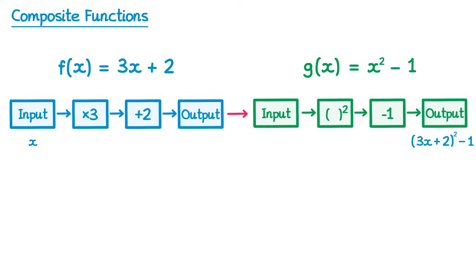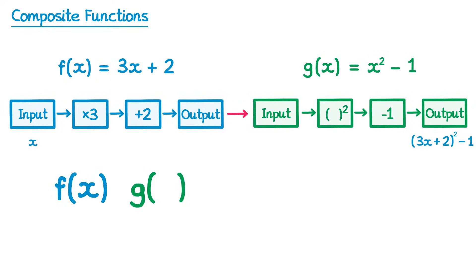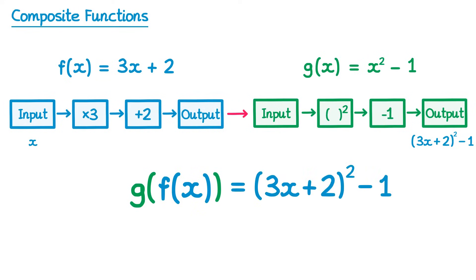So let's recap what we just did. We started with an input x, we applied the function f to it so we got f of x, and then we had a function g. But rather than having x as the input, we put the output from the previous function — so we put a function within a function, like this. This gave us the answer 3x plus 2 all squared take away 1, and this is what's known as a composite function.